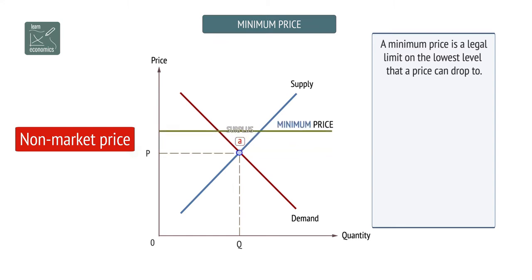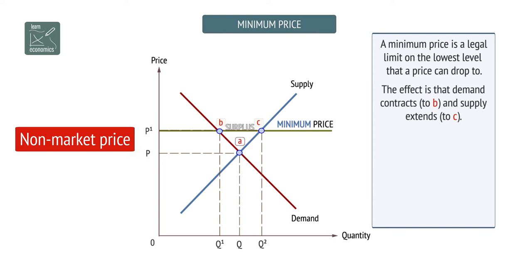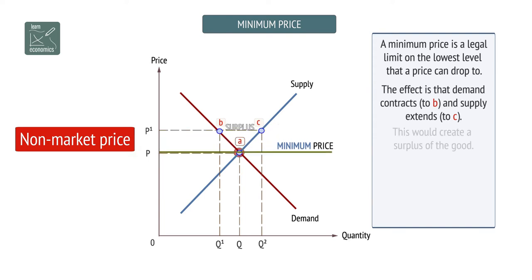The effect is that demand contracts to B and supply extends to C. This would create a surplus of the good.